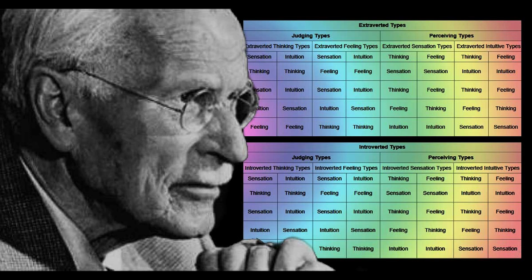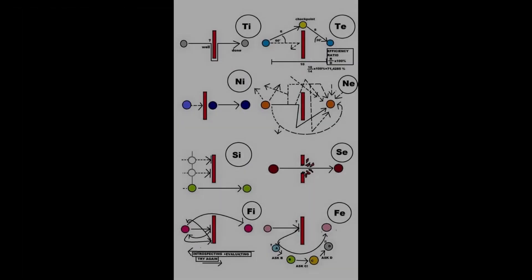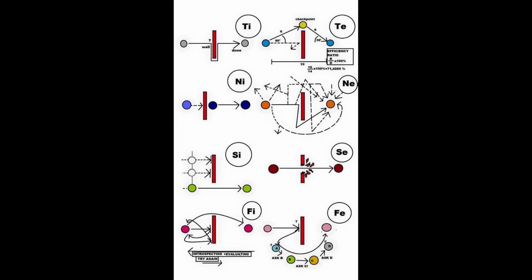Today we'll be looking at the nature of the functions, and I'll be sharing my opinion on a different way to look at the fundamentals. We can start off with the 16 main personality types, which most of you are familiar with by now. Those can be divided into eight cognitive functions, which are just a simple variation of the types with the functions in a different order.